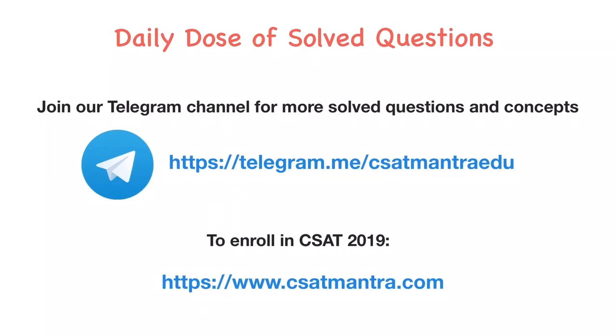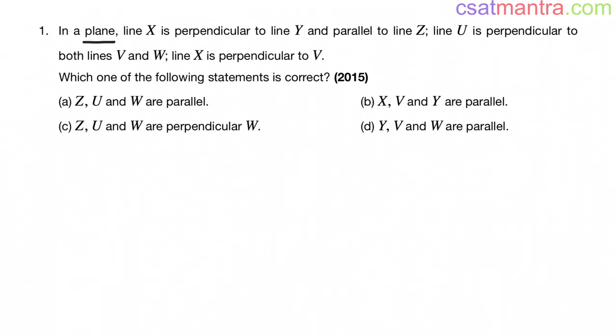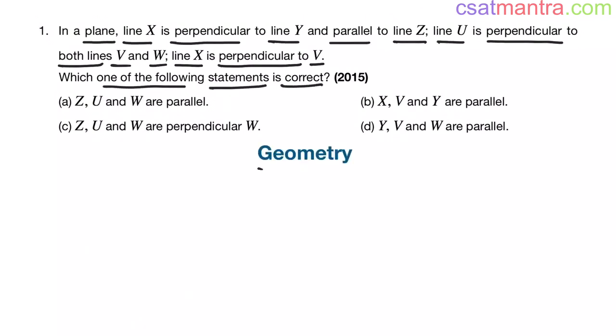Both the links are given below in the description. In a plane, line x is perpendicular to line y and parallel to line z. Line u is perpendicular to both lines v and w. Line x is perpendicular to v. Which one of the following statements is correct? This question is from geometry, asked in 2015.